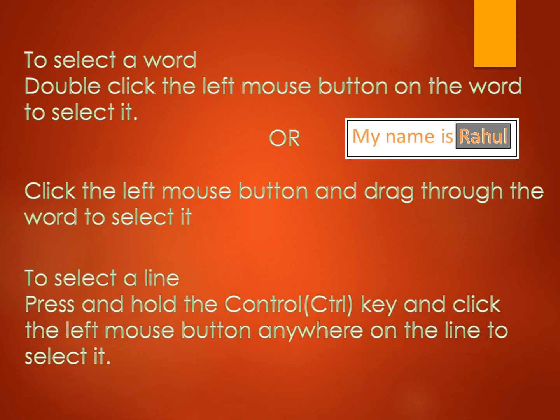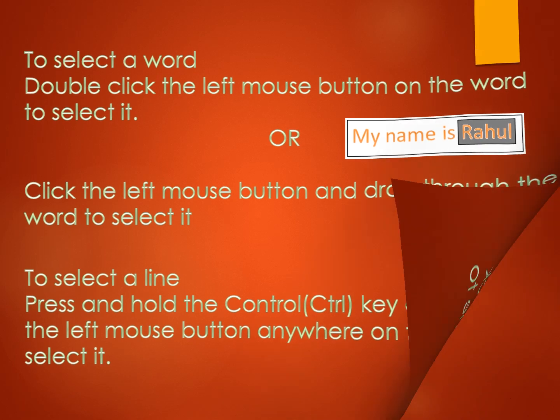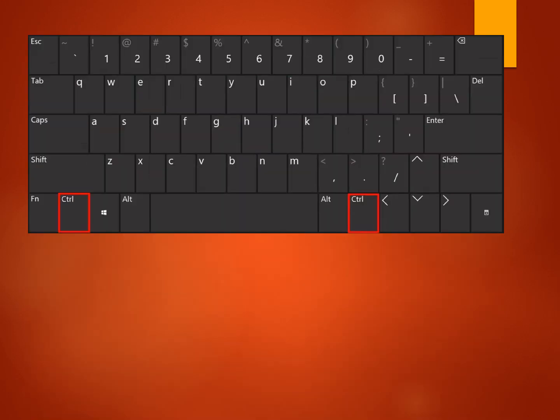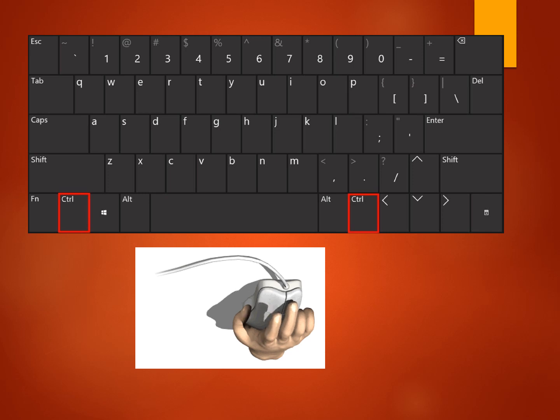To select a line, press and hold the Control key and click the mouse button anywhere on the line to select it. The keyboard has two Control buttons, as you can see. To select a line, press and hold the Control button and, with your other hand, click on the line you want to select with the left mouse button.